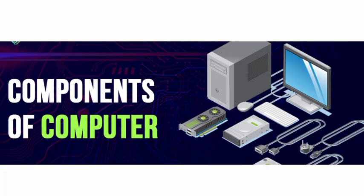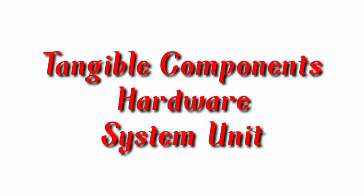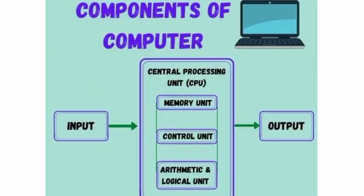Next, let's come to the components of computers. There are two types of components: tangible and intangible. Tangible components are hardware and system units, which include input devices, output devices, storage, and the processor — that is, the CPU. The intangible components are software or programming units.